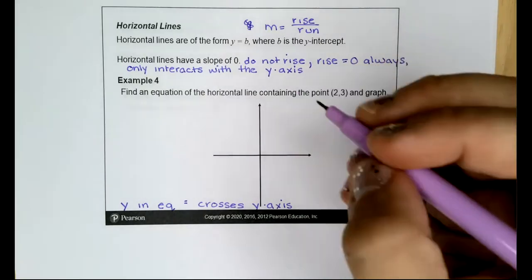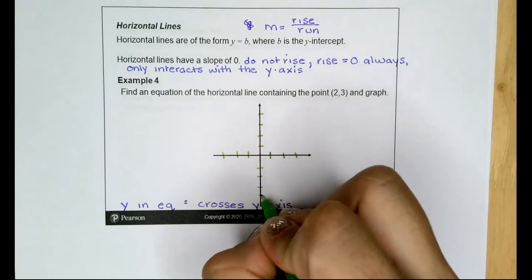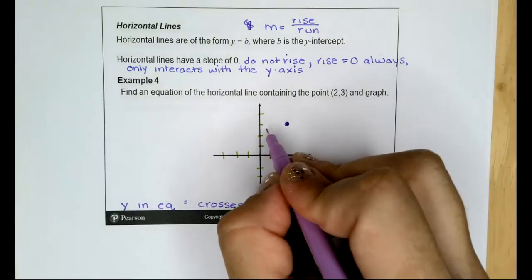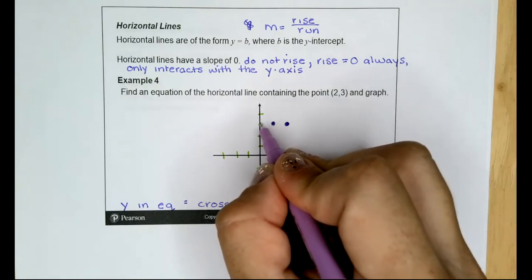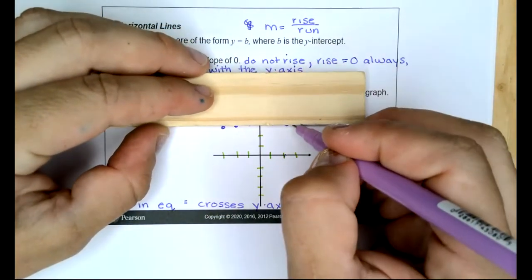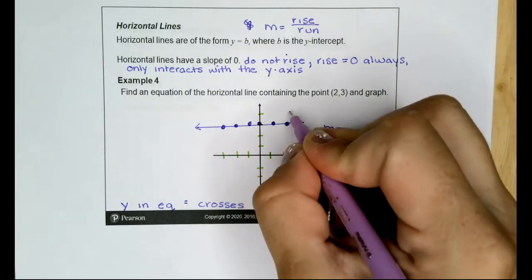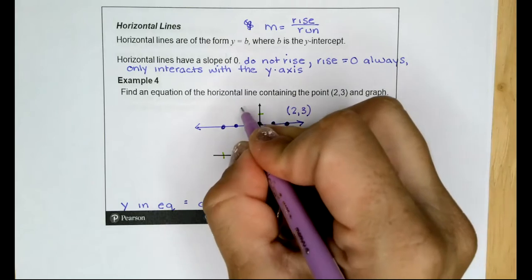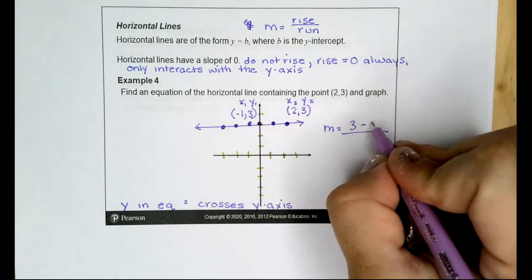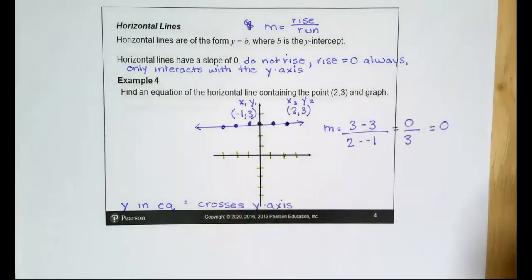Find the equation of the horizontal line containing the point (2, 3) and graph. The point (2, 3) is on the line, which goes straight across. Other points include (1, 3), (0, 3), and (-1, 3) — y is always the same value. Using the slope formula: m = (3 − 3) / (2 − (−1)) = 0/3 = 0, confirming the slope is always 0.